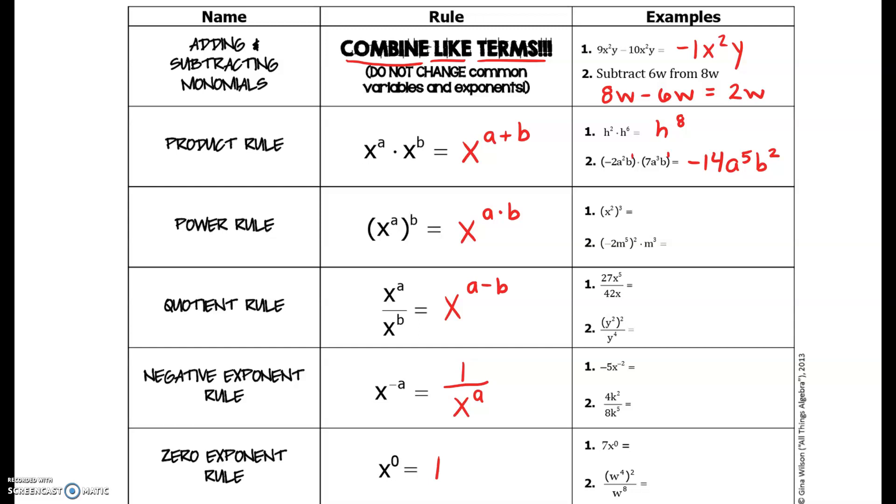In number one for the power rule, two times three, we multiply those exponents, so that yields x to the sixth power. In number two you have a two-step problem.